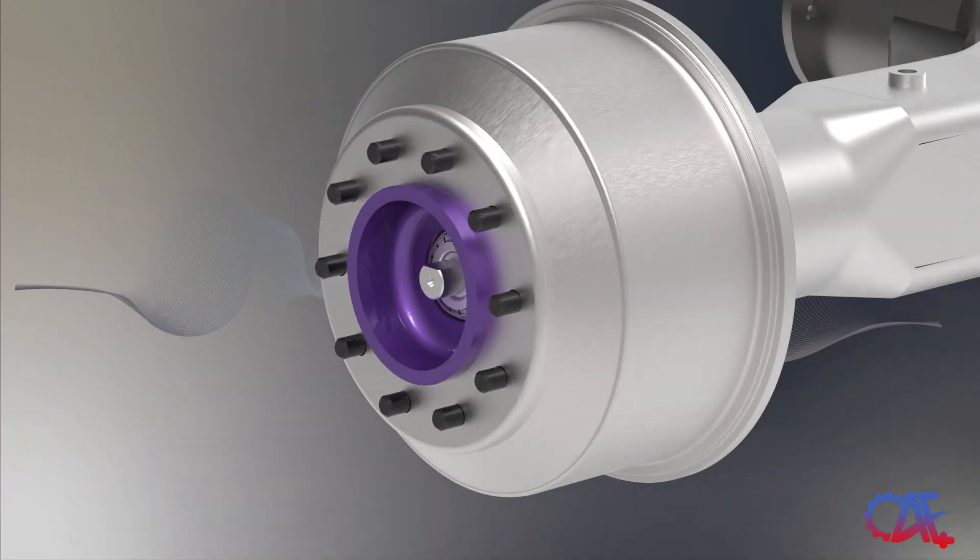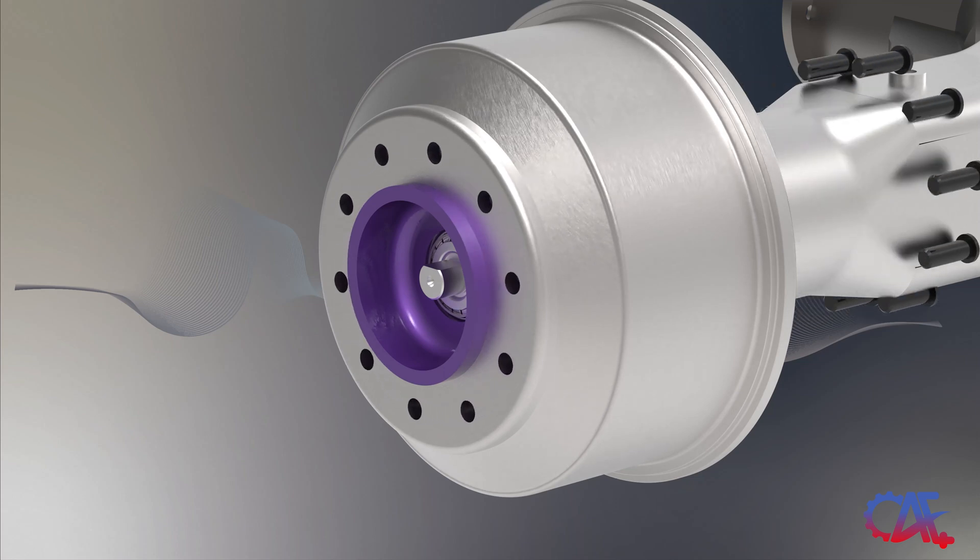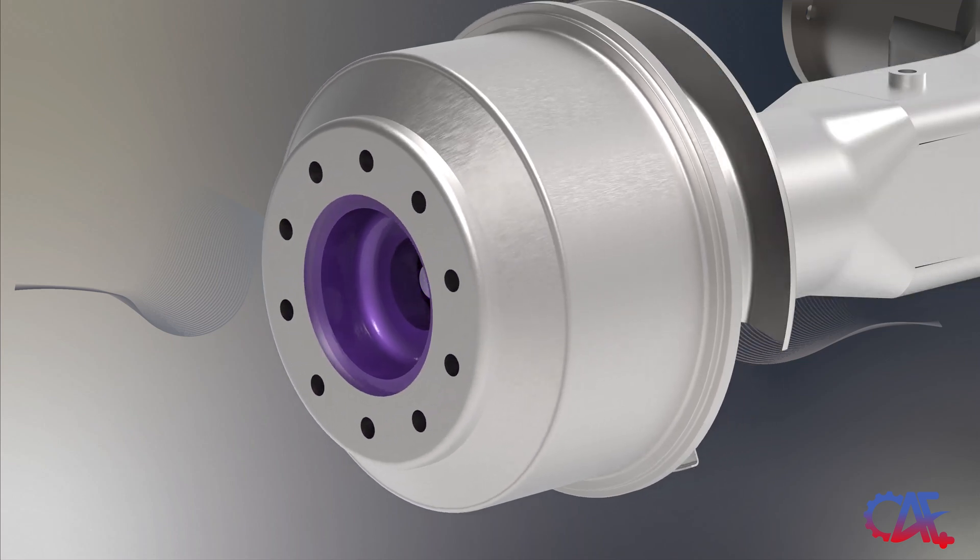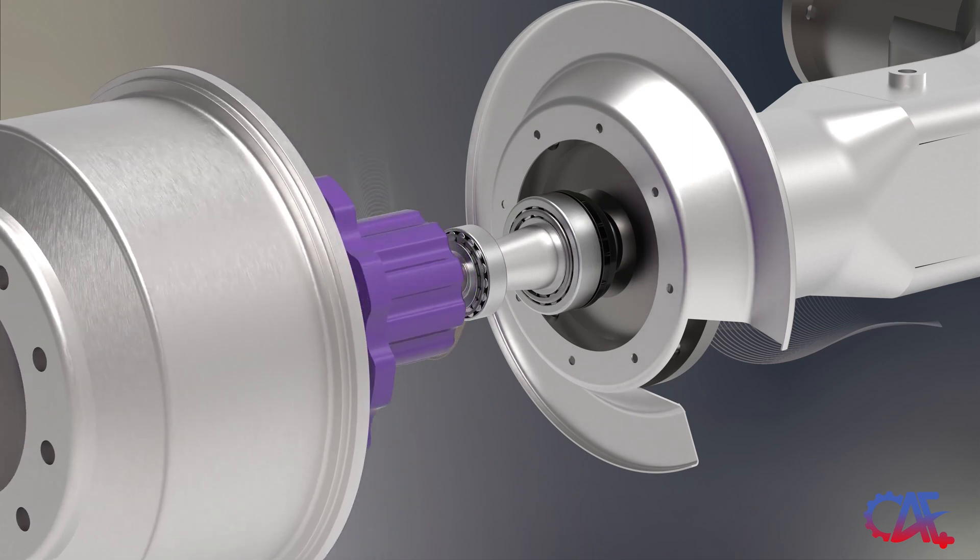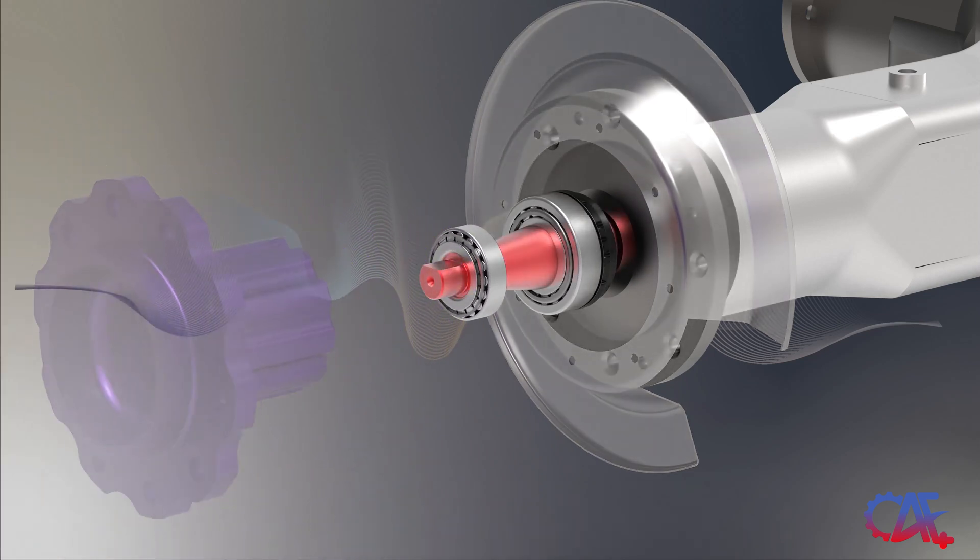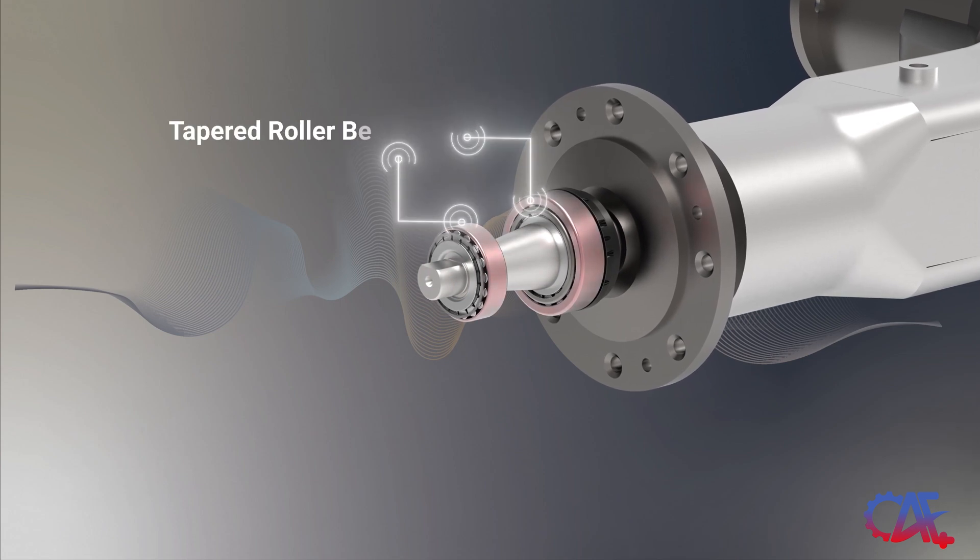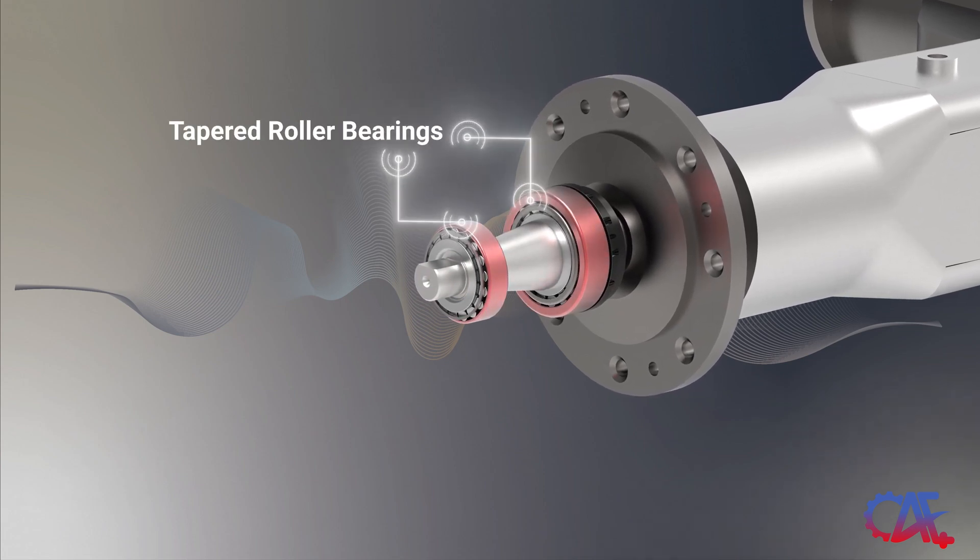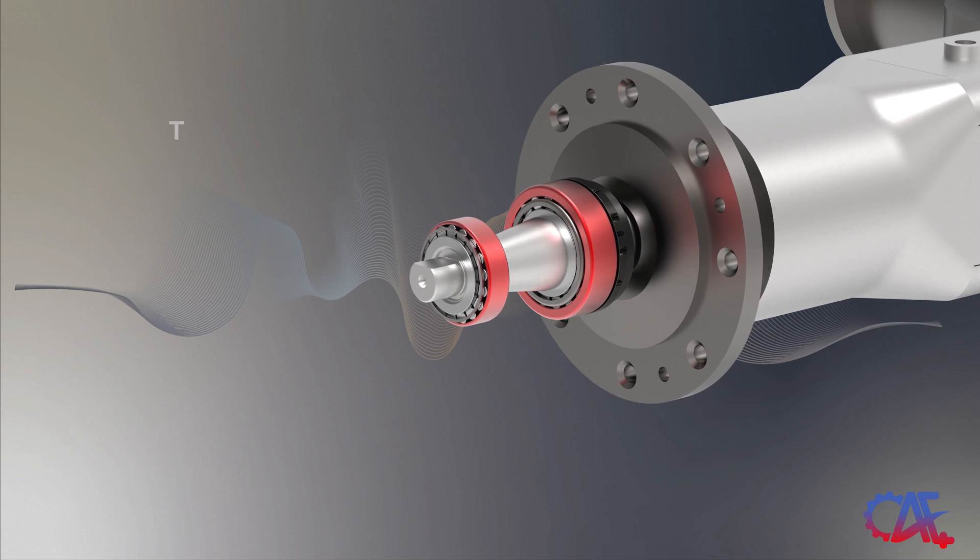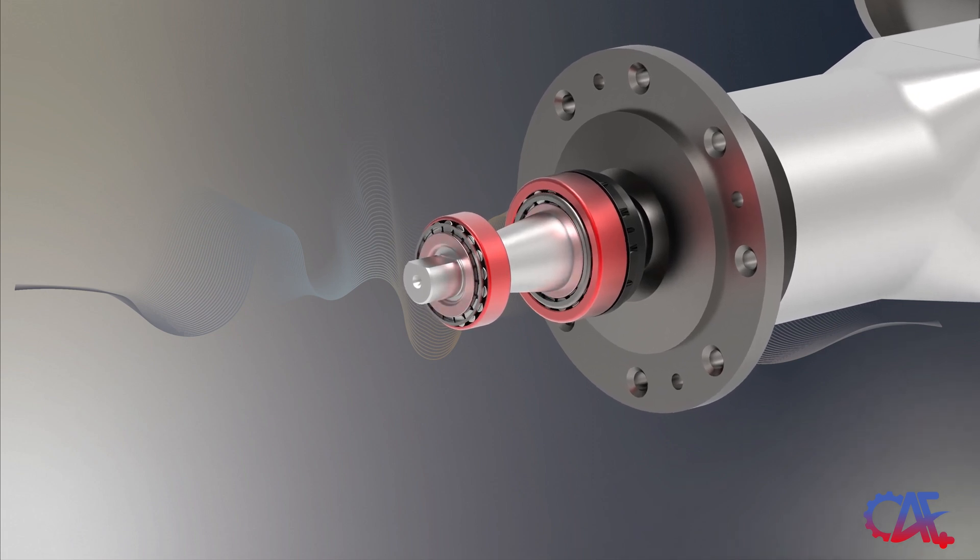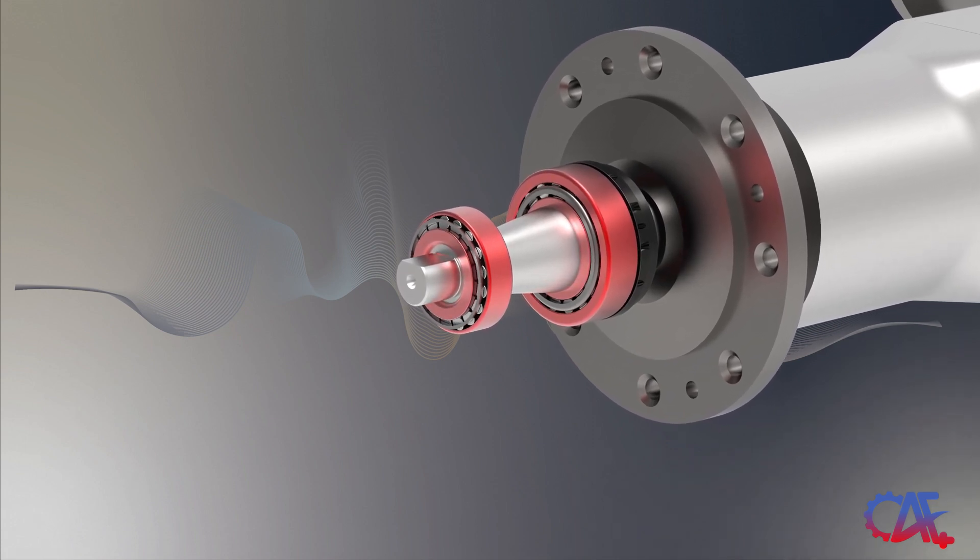For this section's first application example, let's examine a different section of the truck, the wheel hub. The wheel hub serves as the central mounting point for the wheel and tire assembly and is essential in transferring power from the drive axle to the wheels, ensuring the vehicle's movement. It also houses necessary components such as tapered roller bearings, which are critical for efficient wheel rotation. They possess a distinct angular design, enabling them to effectively manage loads from both radial and axial directions.